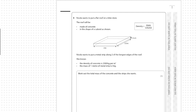Nicola wants to put a metal strip along two of the longest edges of the roof. She knows the density of concrete is 2300 kilograms per metre cubed. The mass of one metre of metal strip is 5 kg. The question asks: work out the total mass of the concrete and the strips she wants — five marks.